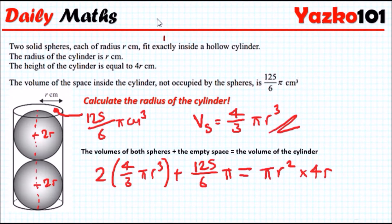So let's go ahead and solve this. Tidying this up, on the left-hand side we're going to have 8 over 3π r cubed plus 125 over 6π. This must equal 4π r cubed. Notice how they all have π's in common, so we can cancel out the π's. All the π's are gone.